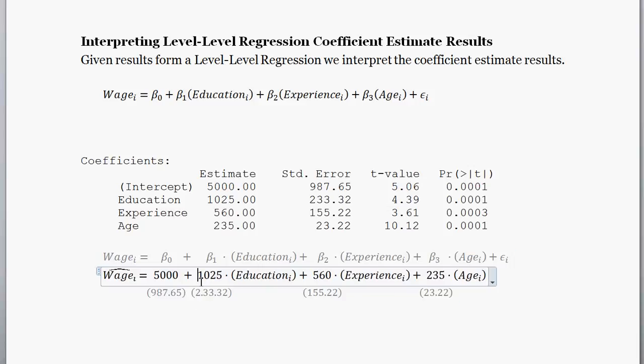So our beta 1 coefficient, the coefficient in front of education we have is 1,025. Our beta 2 coefficient we have is 560. And then our age coefficient estimate we have 235. And then our intercept here is 5,000. So how do we interpret these level-level regression results?